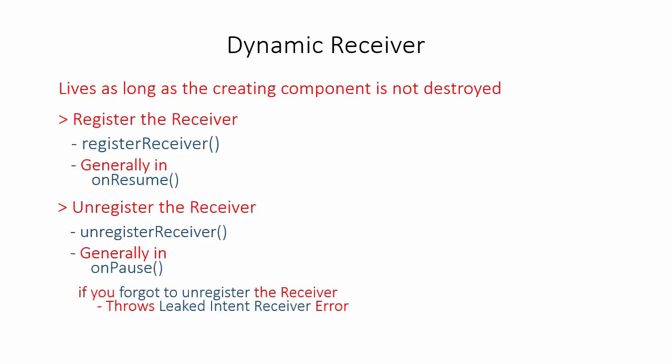For a dynamic receiver, you must first register it, then unregister it when you no longer want to receive messages. Typically, we register it in onResume and unregister it in onPause. If you forget to unregister, it may throw a leaked intent receiver error.